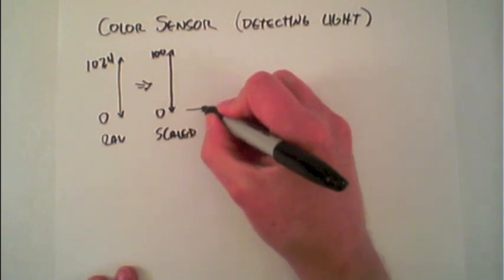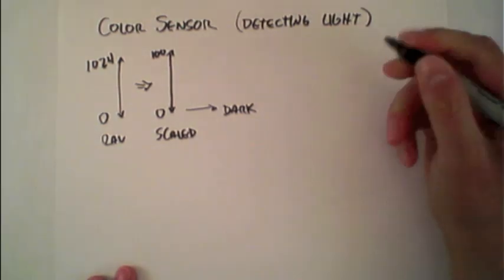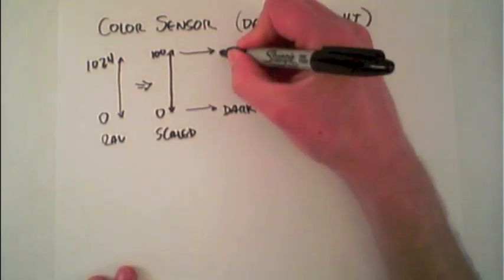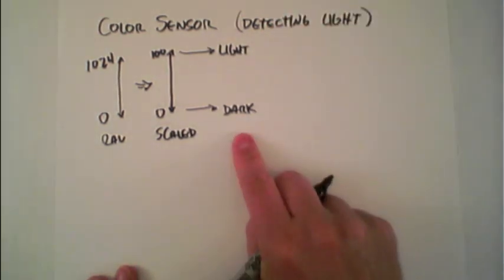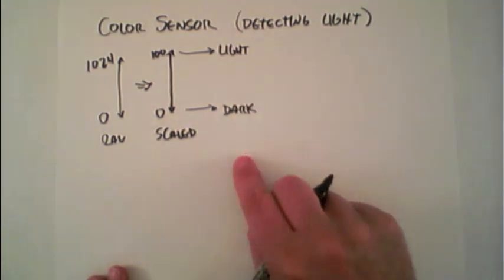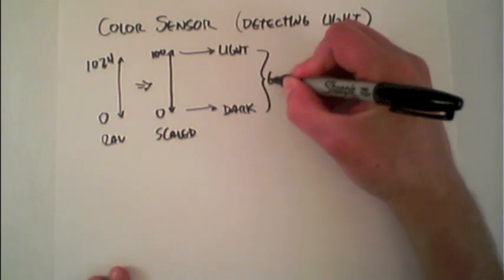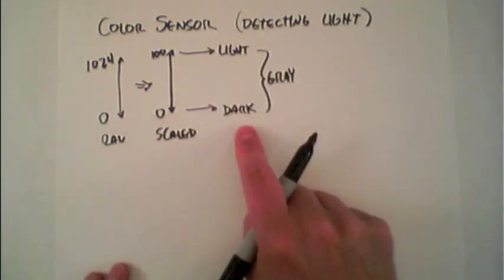0 represents dark when the color sensor is reading very little light, and 100 represents the lighter colors when the sensor is detecting lots of light. This means that in between the two of them will be a continuous grayscale of different values from 0 to 100.